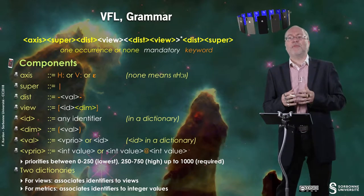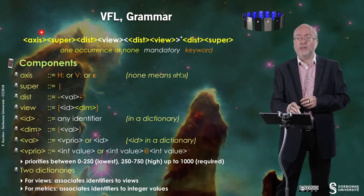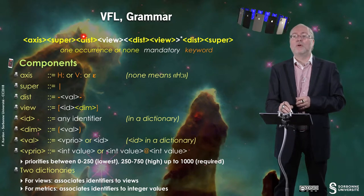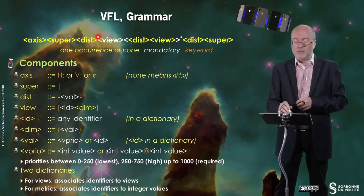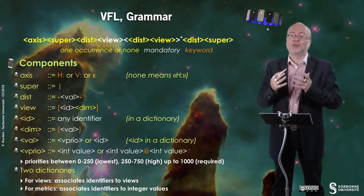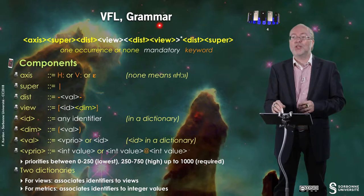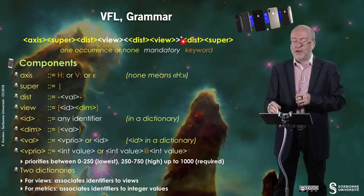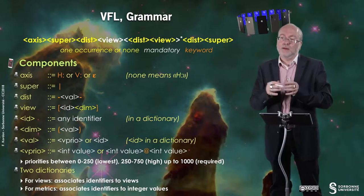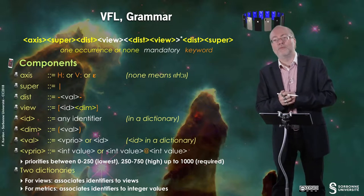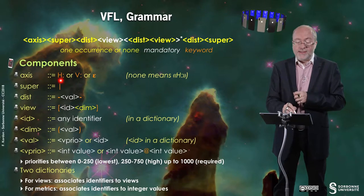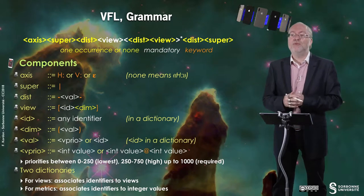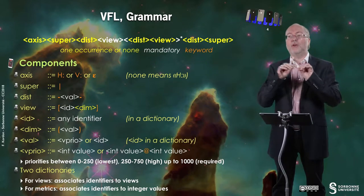Let's have a quick look at the VFL grammar. You define the axis you are working on, then the relation to the super view or its distance, then you have a mandatory part which is the view concerned, and optionally additional constraints relative to other views, and possibly a relation to the super view at the end. The axis is H for horizontal, V for vertical, or nothing — if you state nothing, by default it's a horizontal constraint.